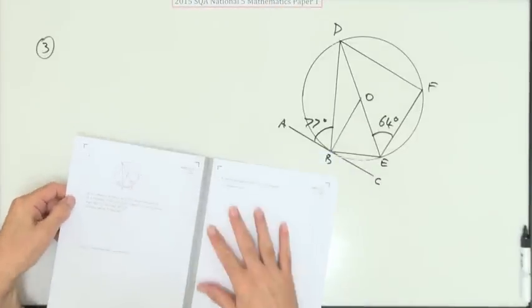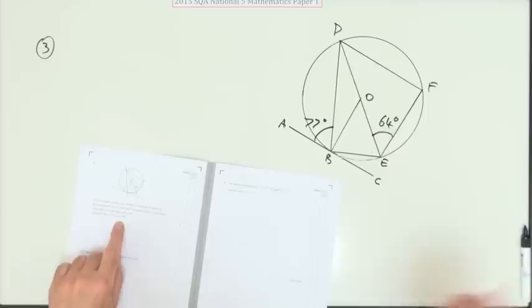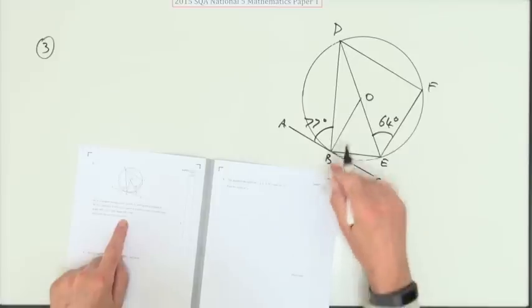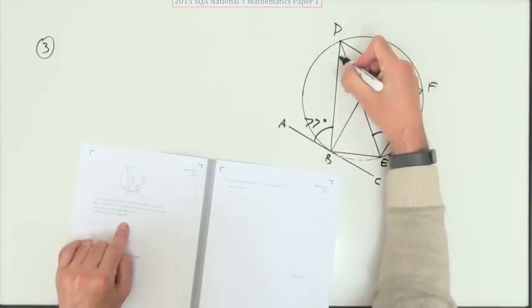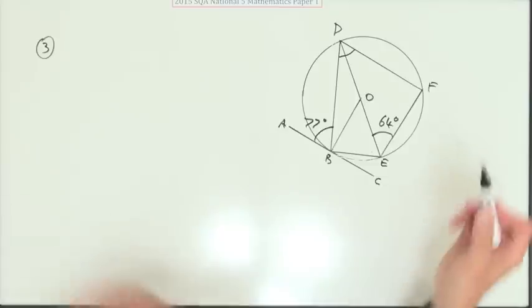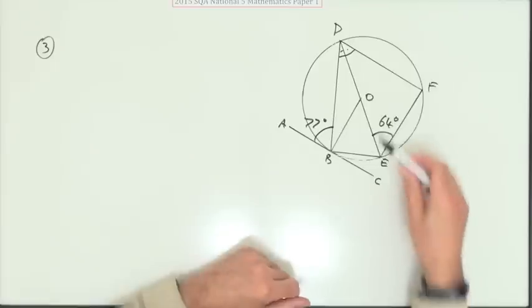Number three then. A circle full of lines, full of right angles, but the first thing to do is identify what do they want. The size of angle BDF. Well that's that double one at the top here. So that probably means that, just taking this diagram now, that I'll have to find these two separately. But where's all these right angles? As soon as you see a diameter, any triangle sitting on it is a right angle triangle.